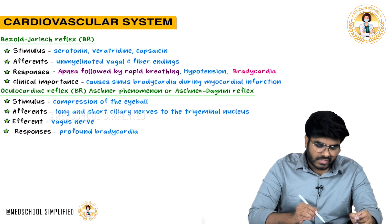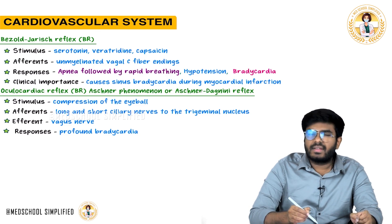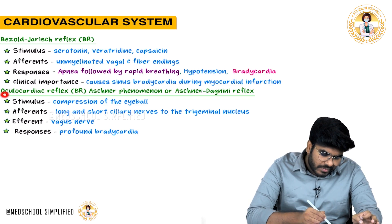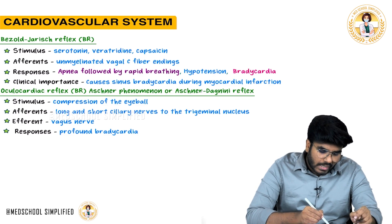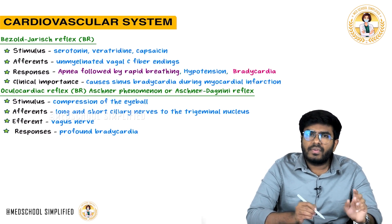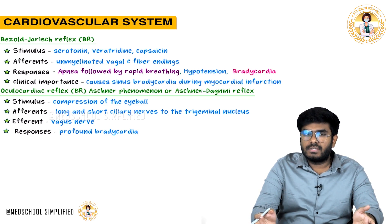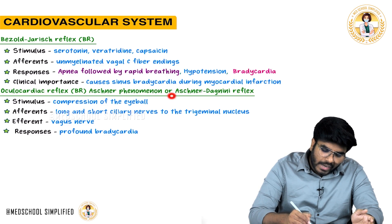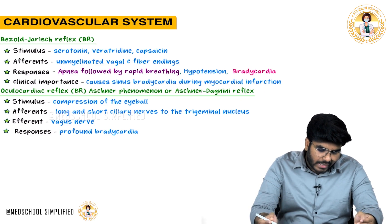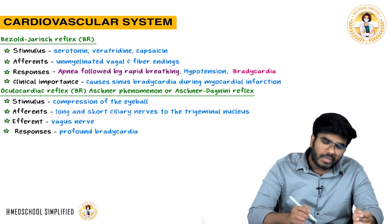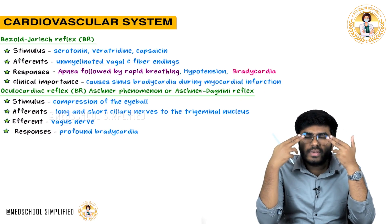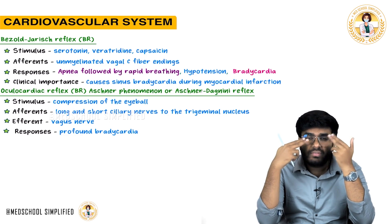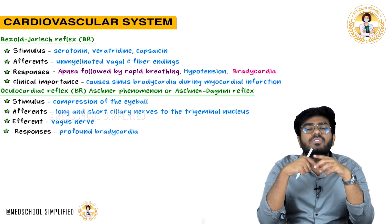Now let's talk about the oculocardiac reflex. The name makes it clear — 'oculo' relates to the eyes, 'cardiac' to the heart. So whenever you do something with your eyes, heart rate changes. It is also called the Aschner phenomenon or Aschner-Dagnini reflex. Whenever you compress the eyeballs or perform oculocardiac massage, heart rate decreases.